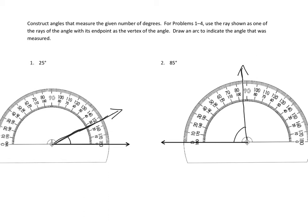And again, I have to draw my arc to indicate which angle I'm indicating. So there we go. There we have problems one and two where we figured out 25 degrees using the inside of the protractor, and 85 degrees on this side using the outside of the protractor.